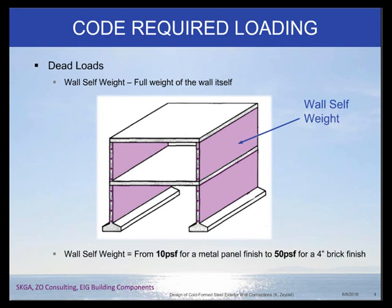The dead load we're looking at is basically the self-weight of the wall itself — how much the wall weighs. This can vary significantly. If you have a metal panel finish, you could be talking about walls weighing 10 pounds per square foot, versus if you have a four-inch brick finish, you could be talking about 50 pounds per square foot. That's a five-times difference, so it's pretty significant.